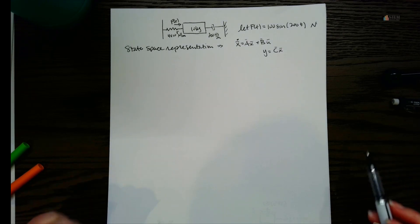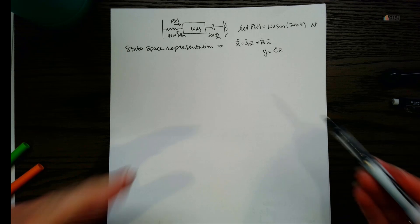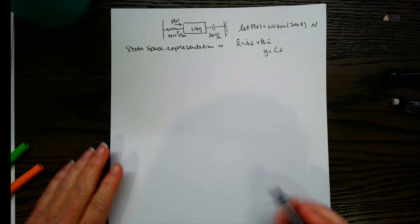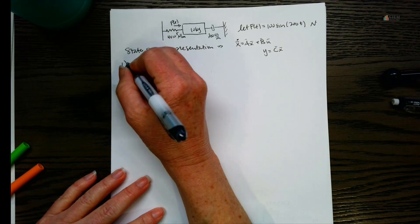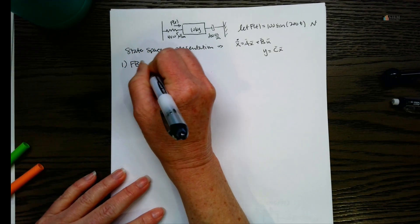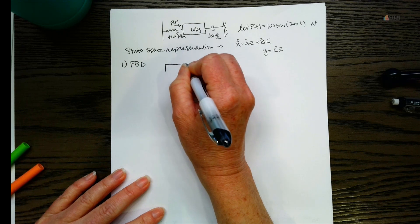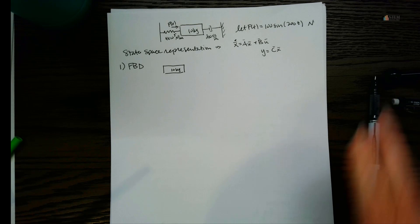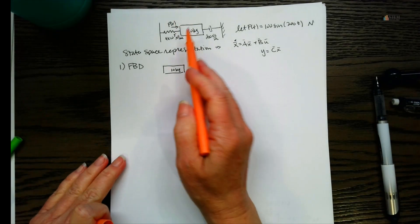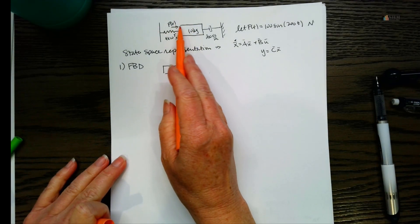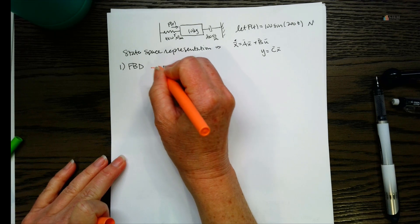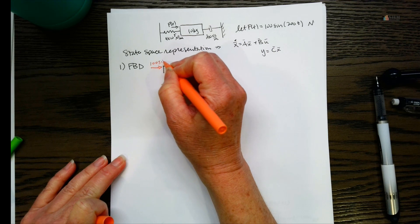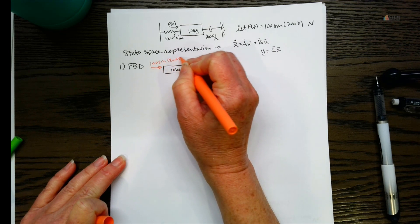The first thing we have to do is draw the free body diagram, because we need to get our equations of motion first. So step one is the free body diagram. Here's our block — 10 kilograms. Let's put our forces on here. First we have the applied force f of t going to the right, which is 100 sine 200t.